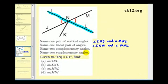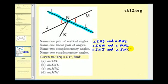Next, we want to name two complementary angles. Complementary angles have a sum of 90 degrees, and since these two angles form a 90-degree angle, angle INJ and angle JNK are complementary. For supplementary angles, beyond the linear pair already mentioned, angle INK and angle KNL are also supplementary because together they form a straight angle.